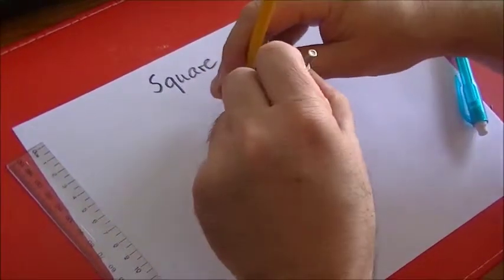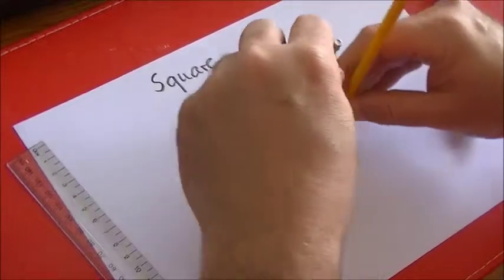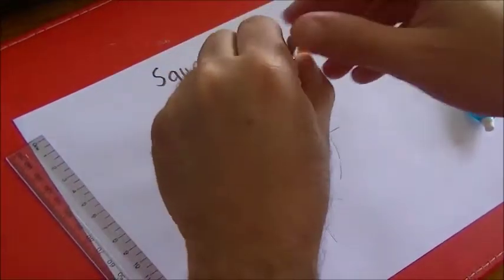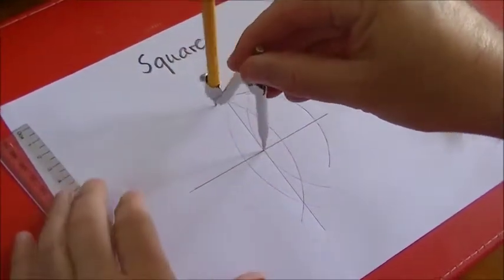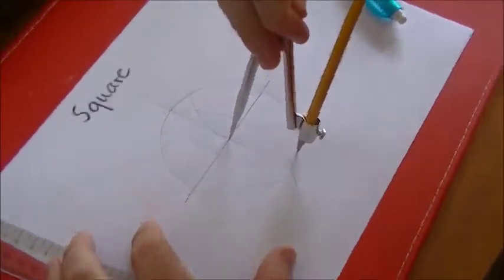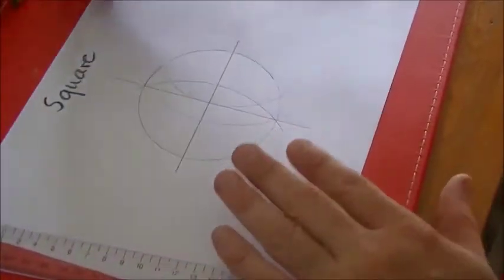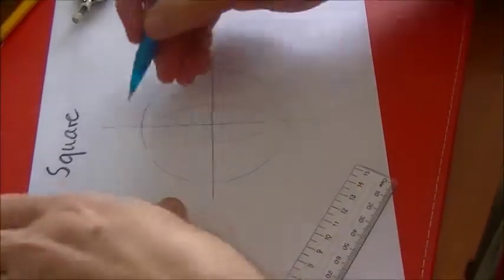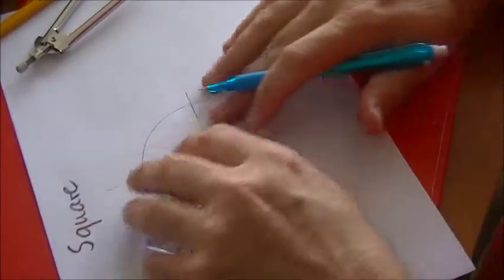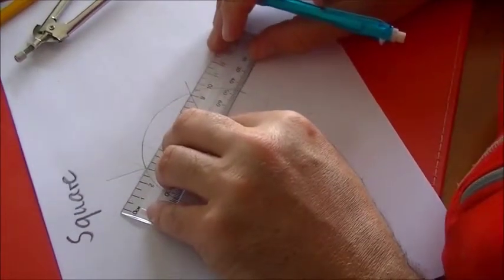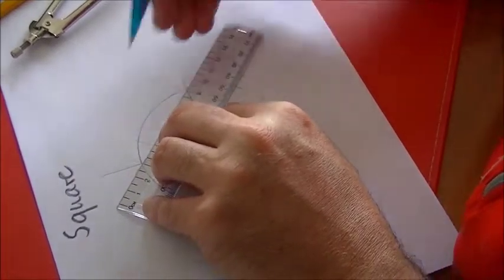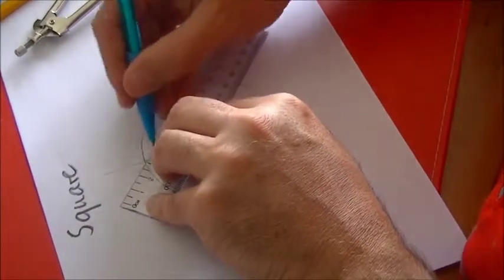Now at this point you might be having trouble seeing how this is going to turn itself into a square, but believe you me, it is. There you go. So now what I'm going to do is go from where those crossed lines intersect with the circle. Nice solid line there.